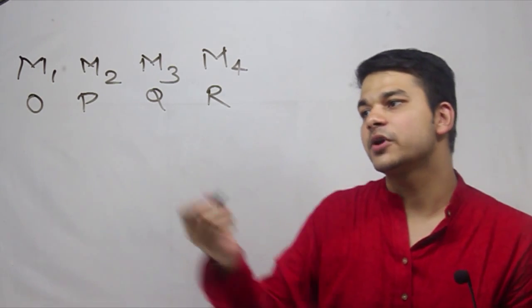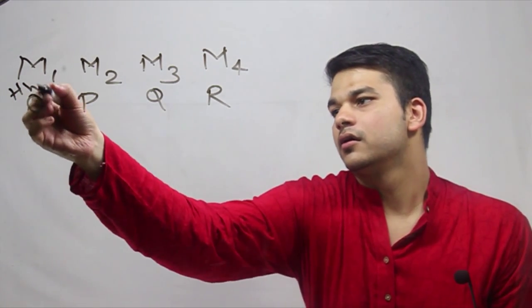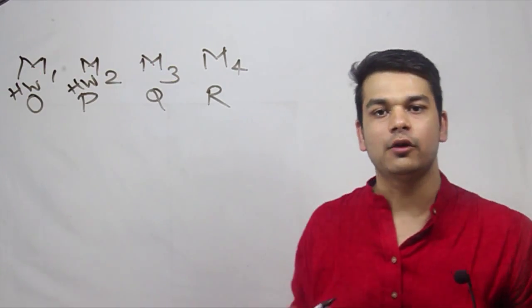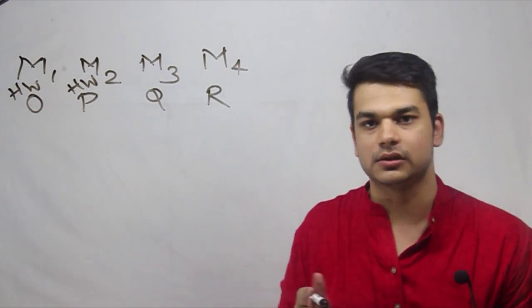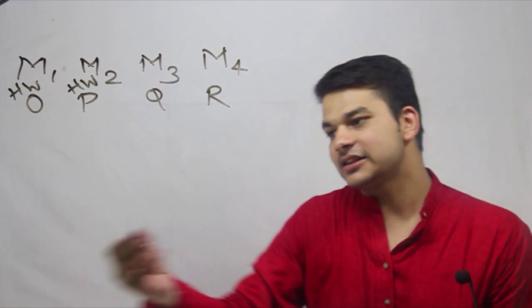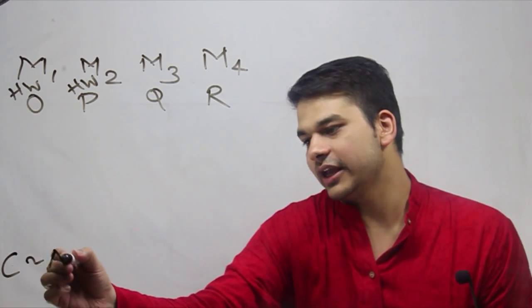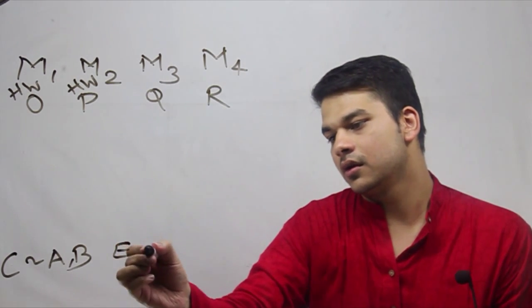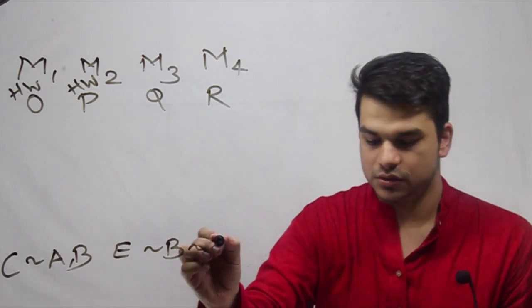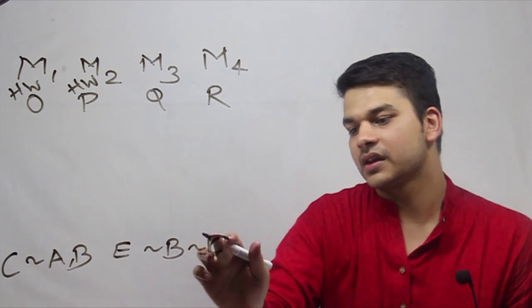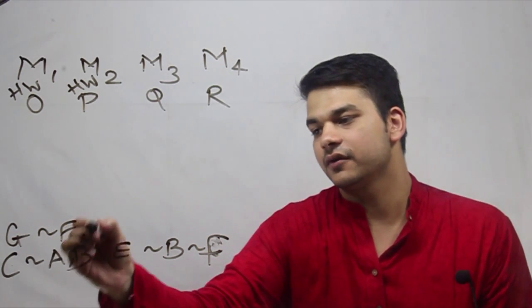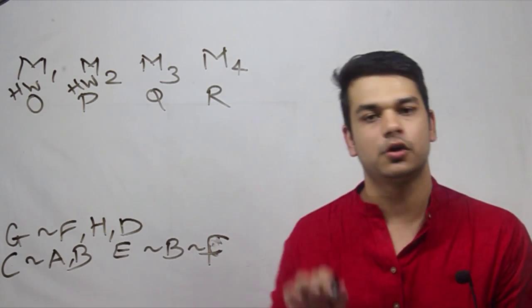Now, it has been stated that the husband-wife pair will travel on M1 and M2, and only two people travel on one motorcycle. It has been stated that C cannot travel with A or B, and E cannot travel with B or F. It has also been stated that G cannot travel with F, H, or D.